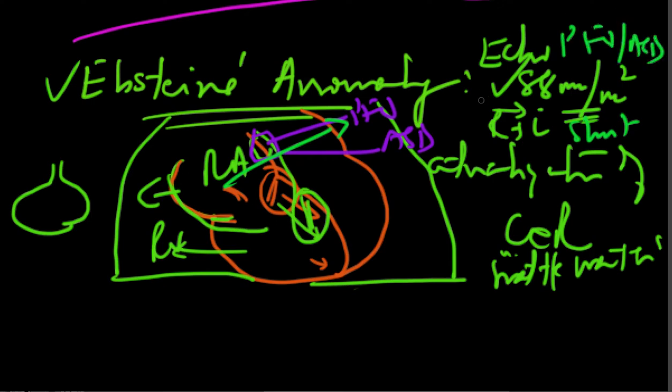If the shunt is traveling in this direction it's called the right to left shunt. These are the features of Epstein's anomaly. 88 millimeters per meter square of septal tricuspid leaflet displacement. A PFO or an ASD associated with it. The shunt magnitude is dependent upon the size and the pressures in the right ventricle. There will be huge TR and pulmonary hypertension. These patients have to be operated rather quickly.